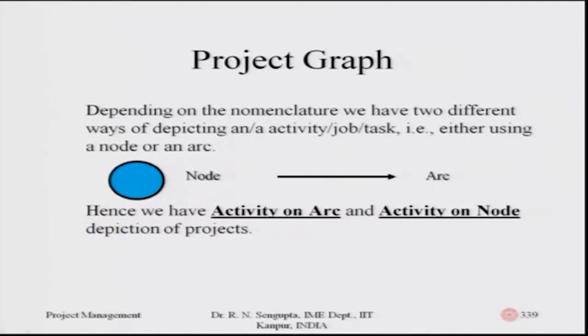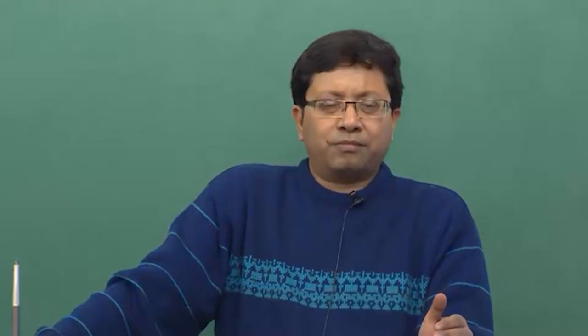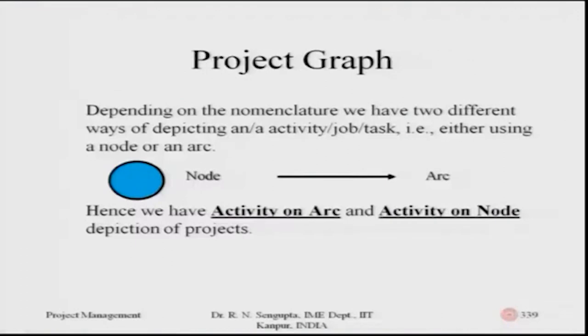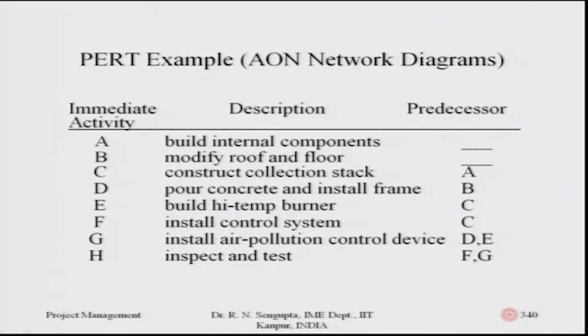Coming back to the project graph — I will revisit a problem we did earlier, but I strongly urge students to go through these slides because they show how variance and expected value are utilized to calculate the probability of finishing work within a certain time frame. Depending on the nomenclature, there are two ways of depicting this: activity on arc (AOA) and activity on node (AON). Here, nodes are shown as blue circles and arcs as black arrows.